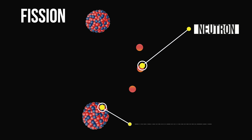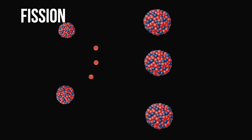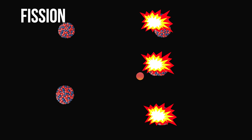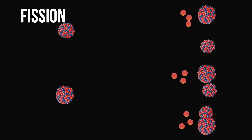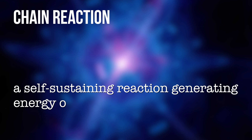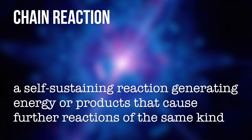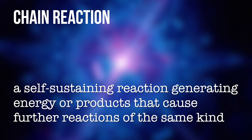Additional neutrons are also released and they slam into other isotopes to initiate additional fission reactions, also known as chain reactions. A chain reaction is a self-sustaining reaction, generating energy or products that cause further reactions of the same kind. When each atom splits, a tremendous amount of energy is released.